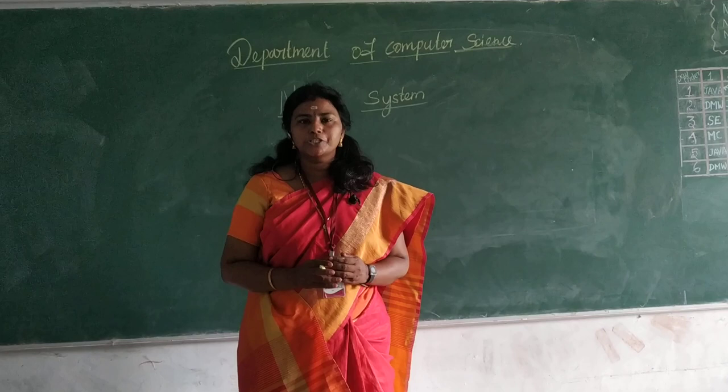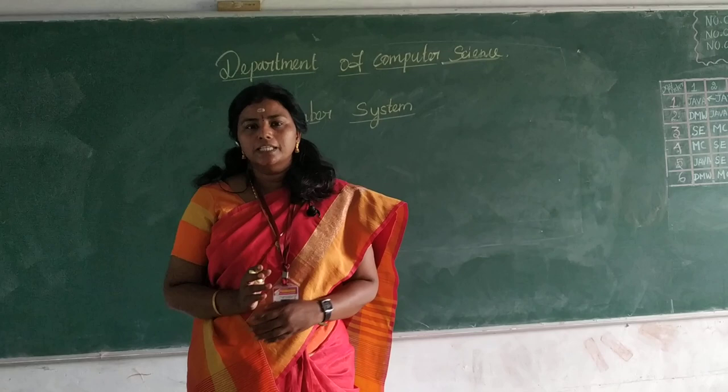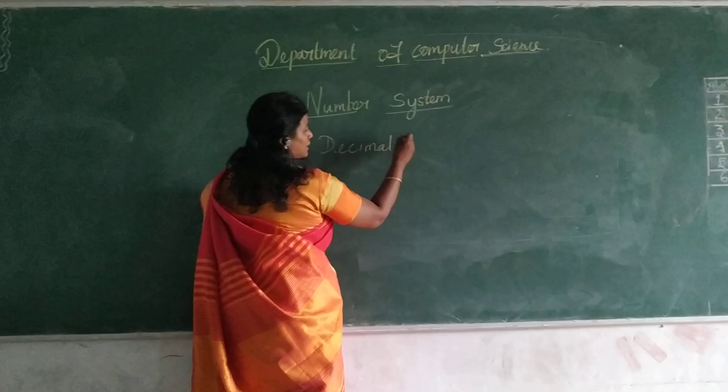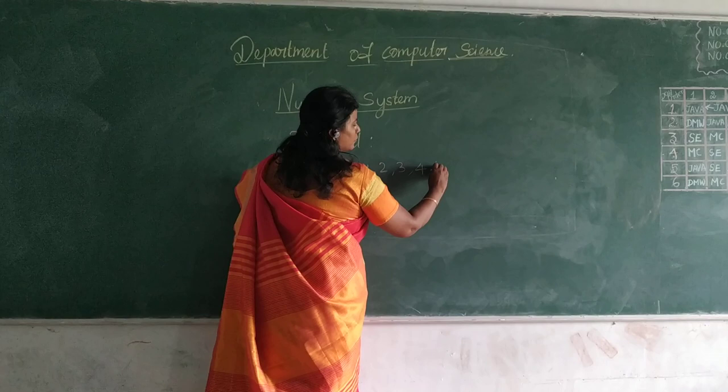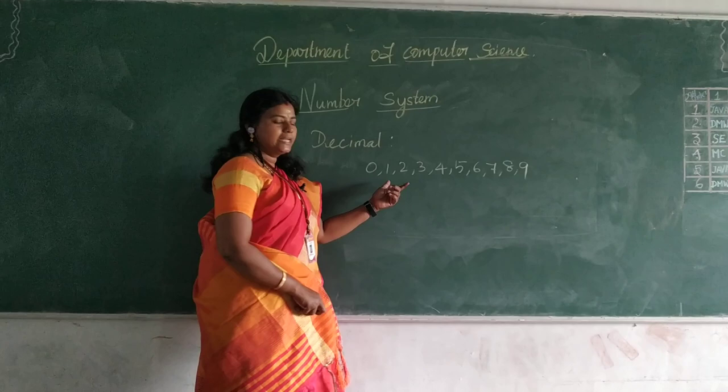Deci means 10. So in the decimal number system, there are 10 digits. Those digits are 0, 1, 2, 3, 4, 5, 6, 7, 8, and 9. By combining any of these numbers, we can be able to represent any values.